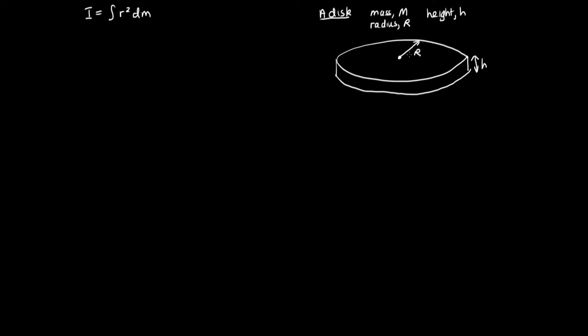With our disc, we're going to break it up into little rings. Consider a little ring with a width dr, located a distance r from the pivot point — the center of the disc about which the disc is spinning.